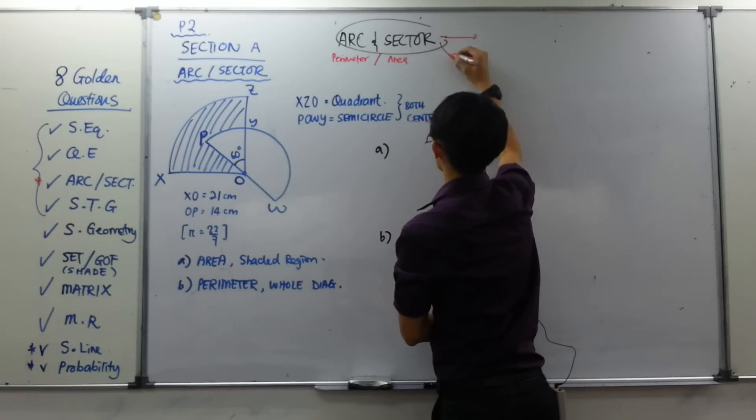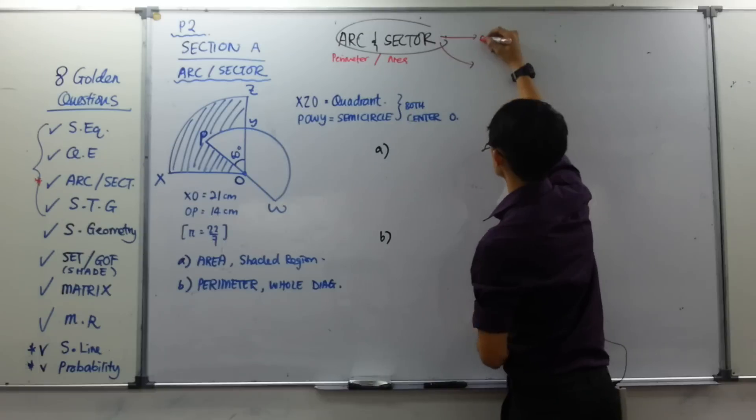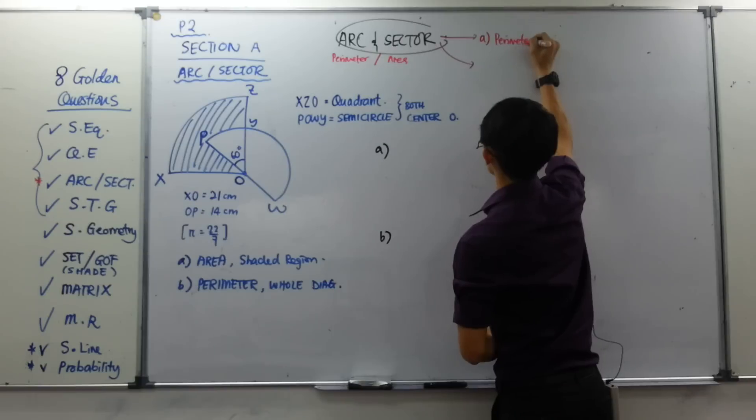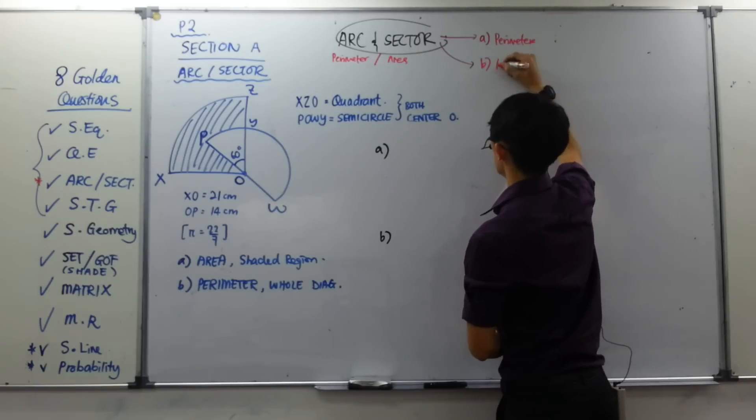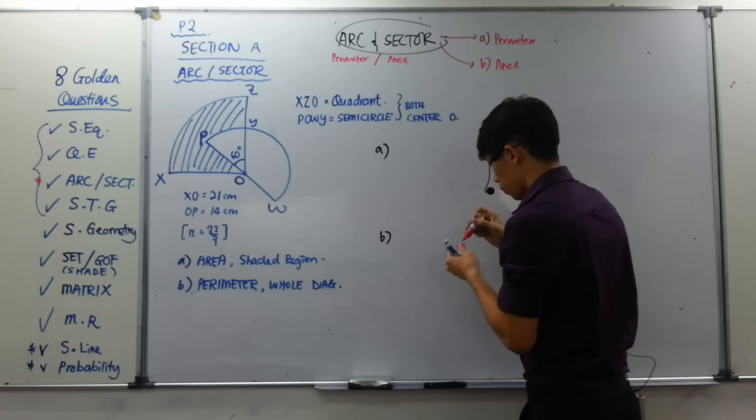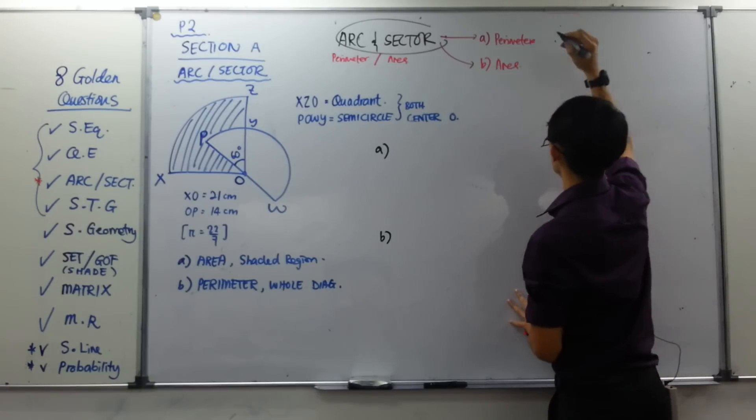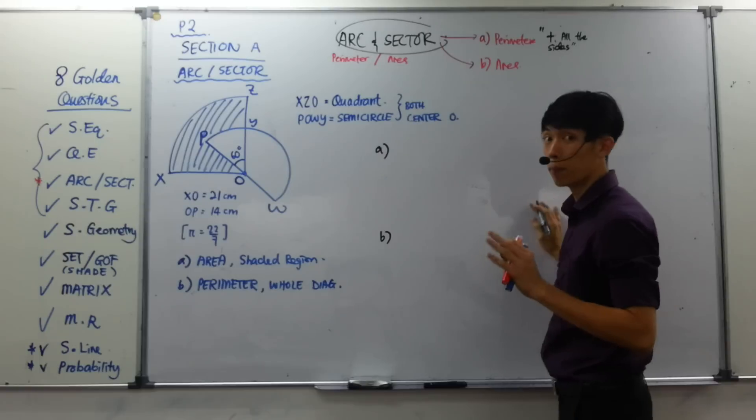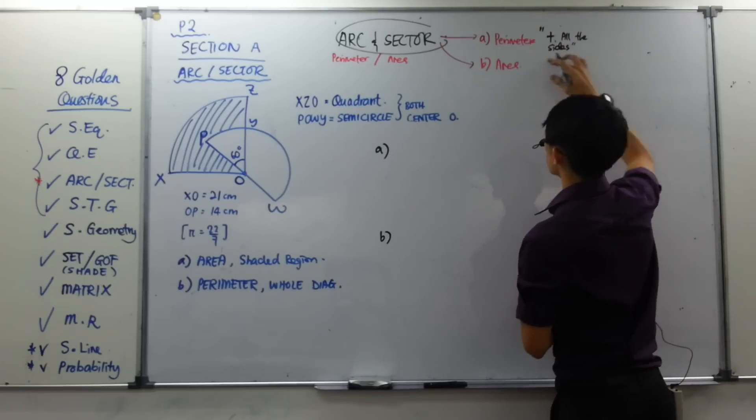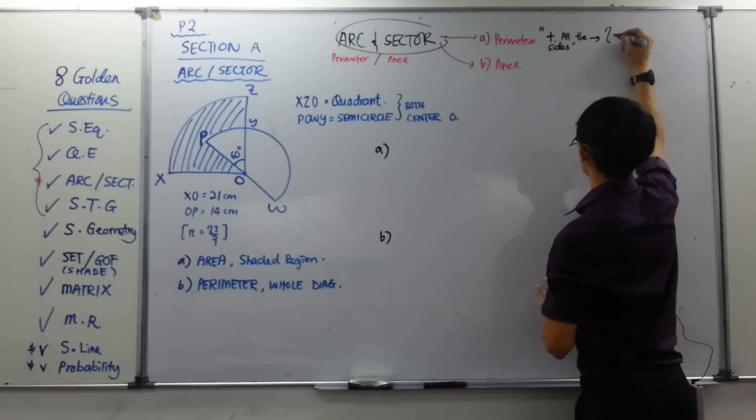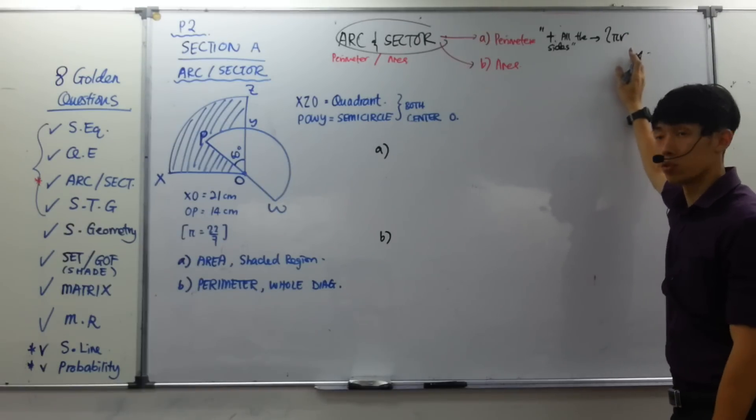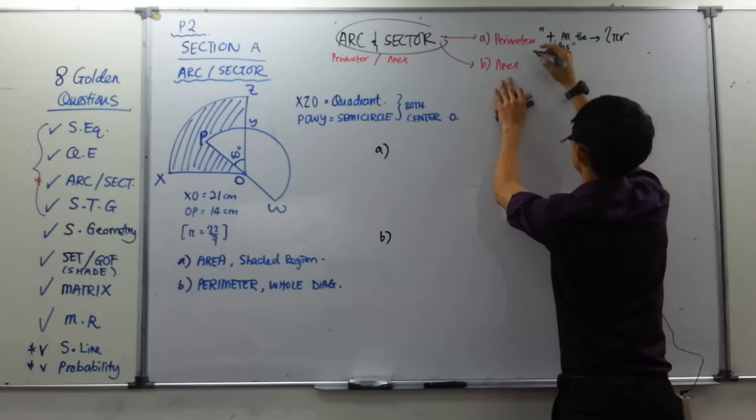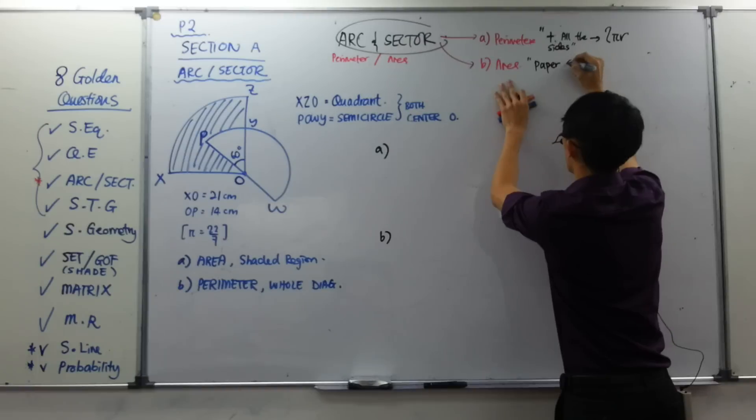So the next thing will be, I will write down the 2 keywords that will come out in your exam. The first keyword is called perimeter. The second keyword that will come out in your question will be this thing called area. And based on these 2 things, I'll write down a few informal words here. The first informal word for perimeter will be, you have to plus all the sides. Plus, no minus involved, remember that.